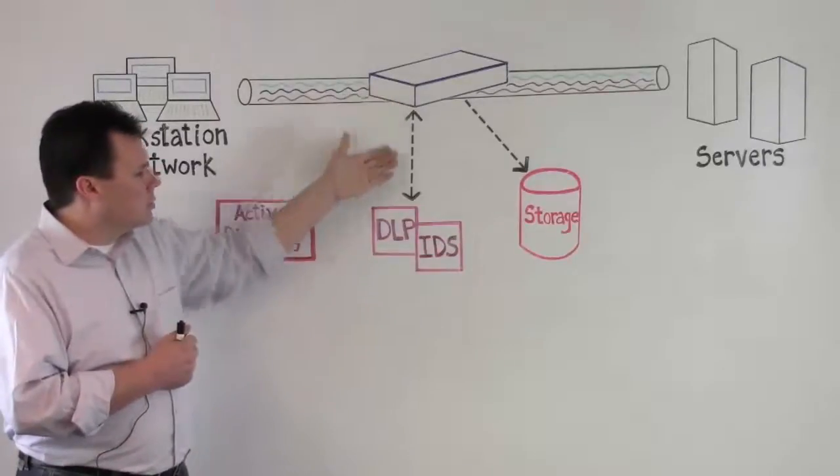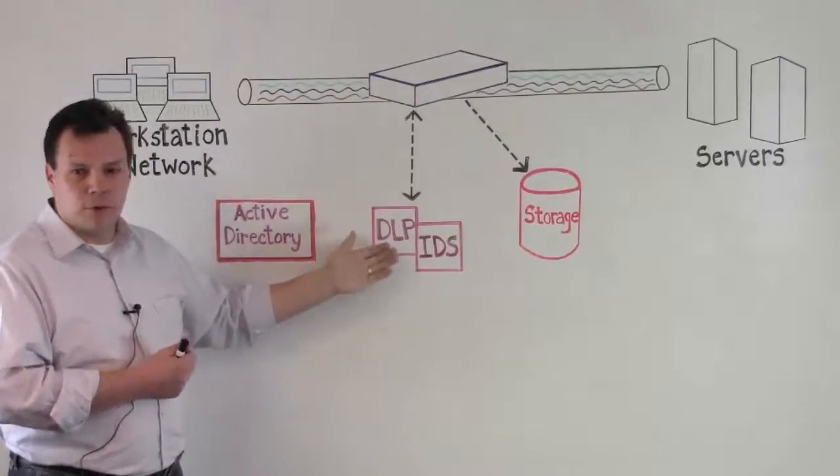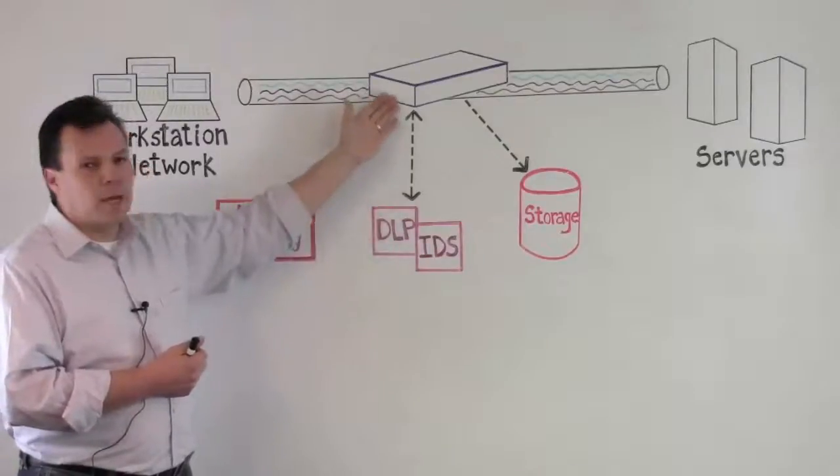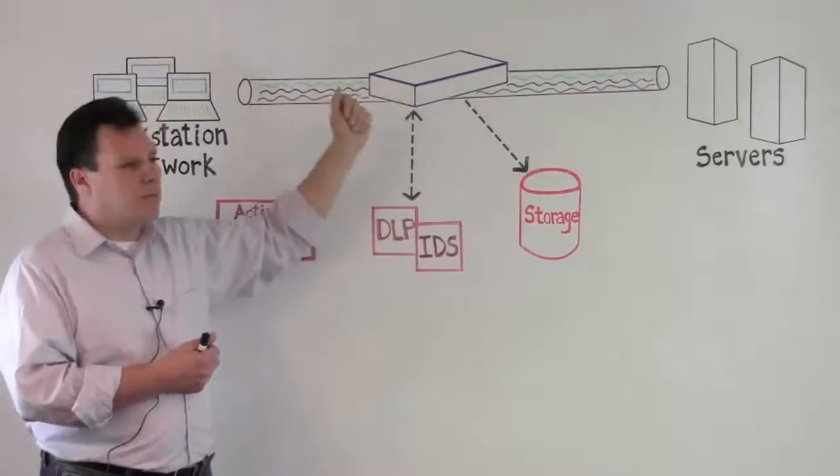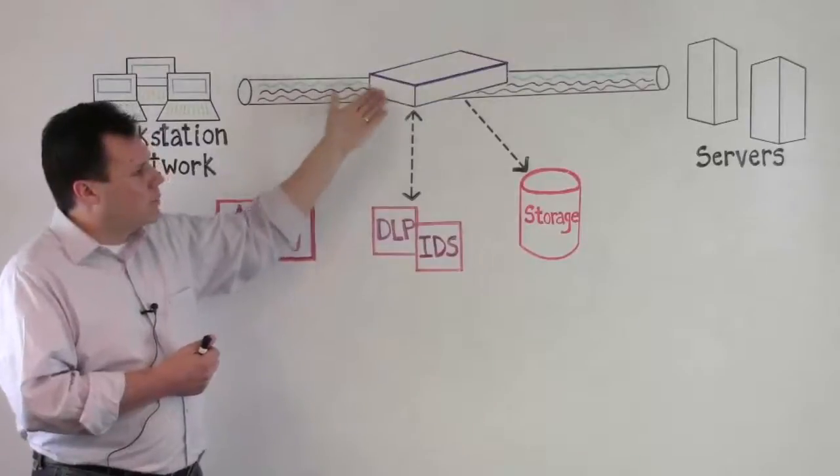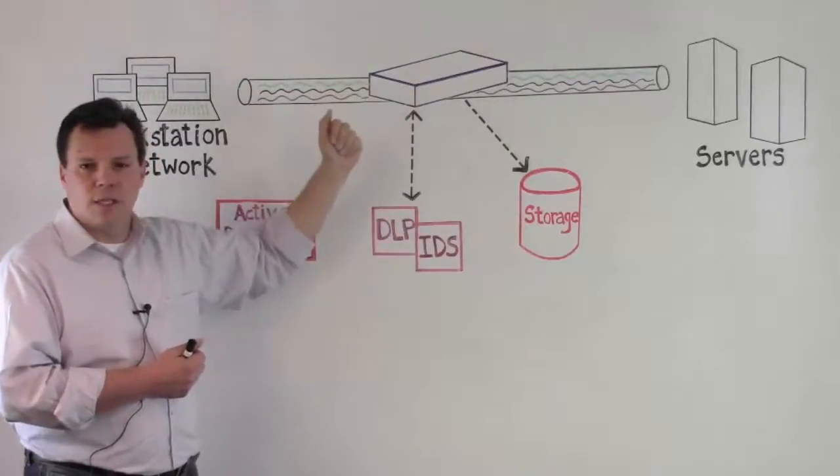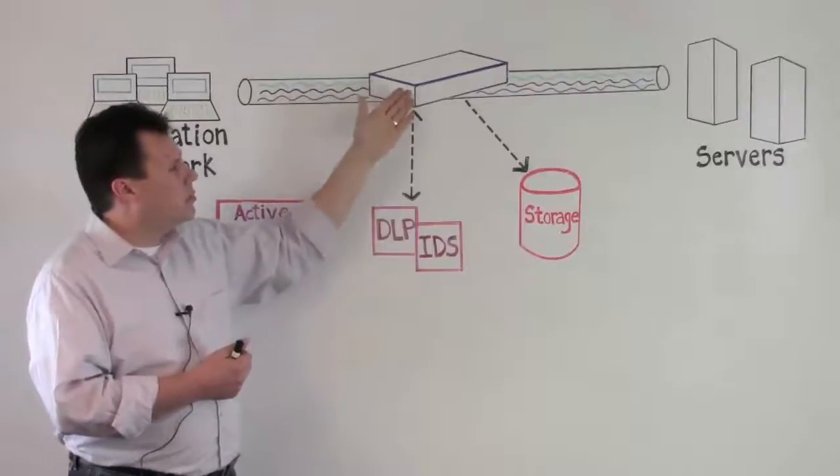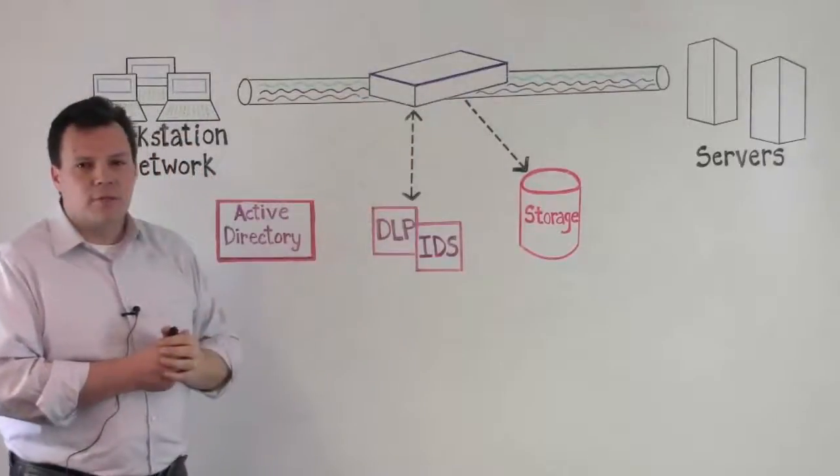So you can also refer the traffic to, for example, a DLP that will then signal back saying this tunnel is essentially allowed. And once you get that back, you can let the traffic flow through.